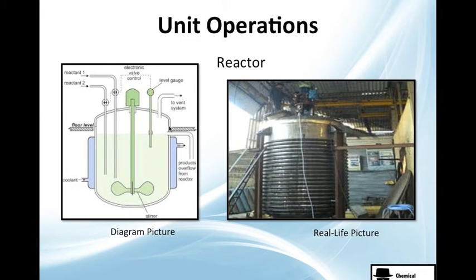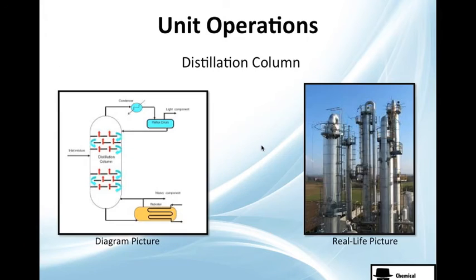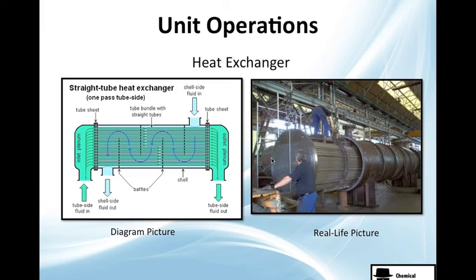Here's an example of how you see unit operations in school textbooks — very nicely illustrated. The problem is in real life you don't see that. You don't see labels outside; maybe you see some tubes and an inlet, but you don't know where everything is. For a distillation column, in a textbook you'll see the column with head and bottom clearly labeled, but in real life there's a lot more going on that isn't obvious.